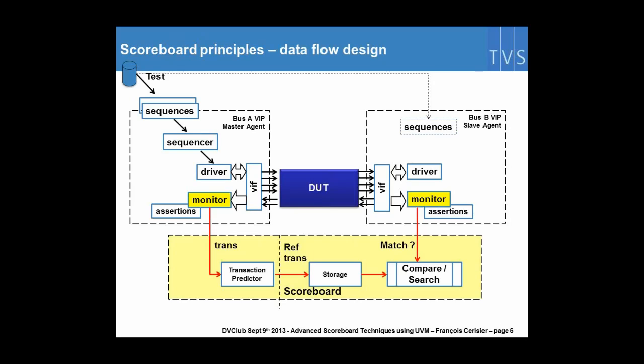Here I'm showing a simple scoreboard architecture where the master agent is collecting the transaction, sends it to the scoreboard. The transaction predictor is responsible for translating the transaction into the reference transaction that we store.